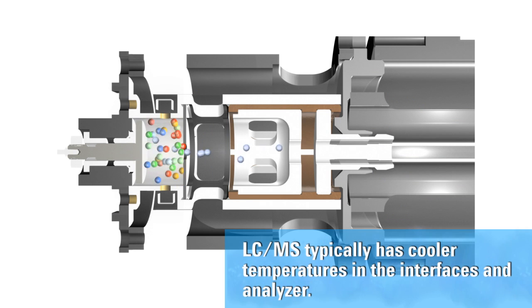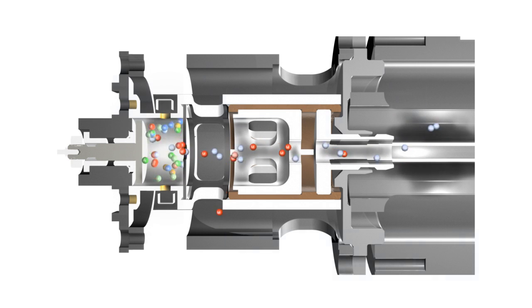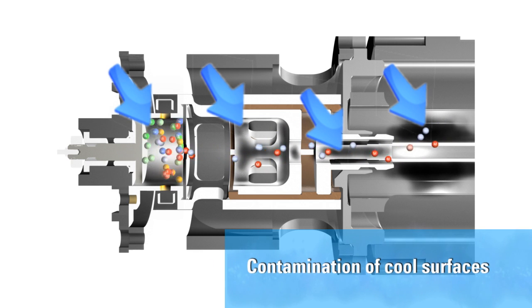For an LC atmospheric pressure source like ESI, metal quadrupoles at temperatures of 100 degrees Celsius are perfectly adequate and commonly used. But for GC-MS-MS analysis, metal surfaces at this temperature will quickly become contaminated.